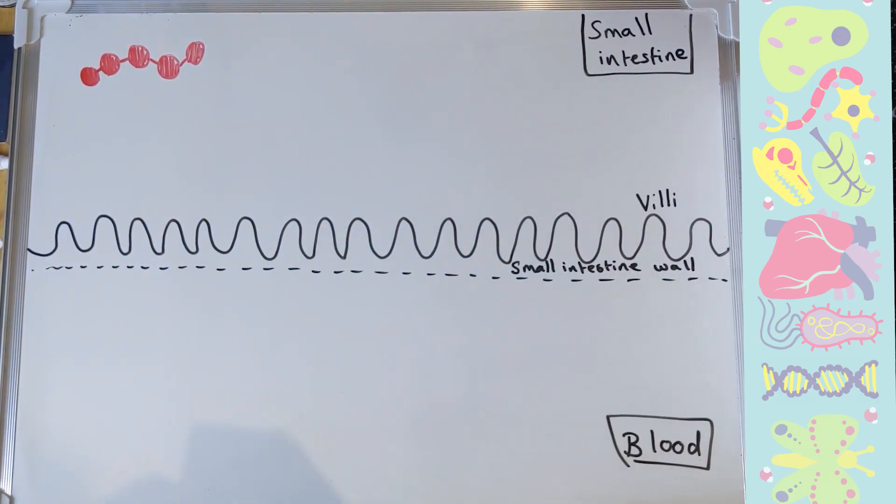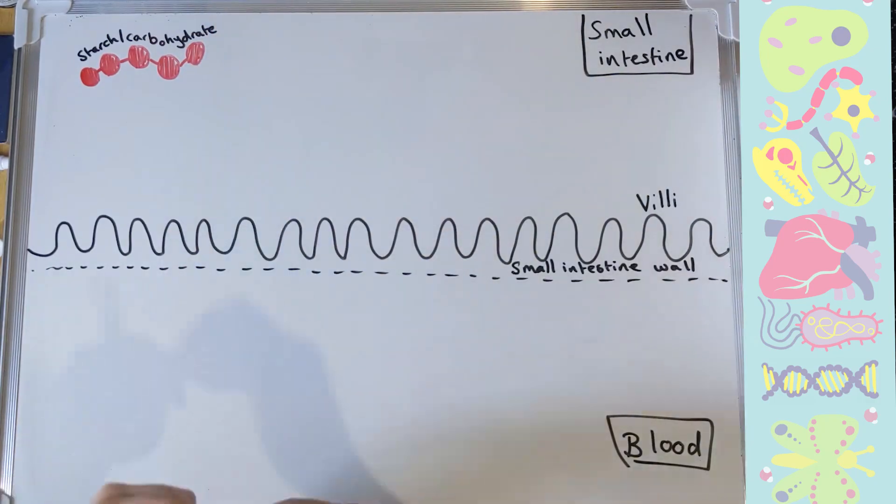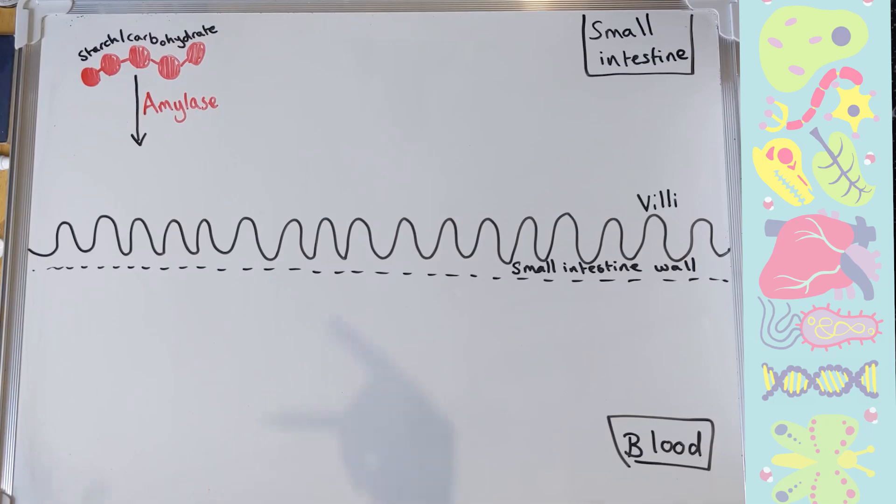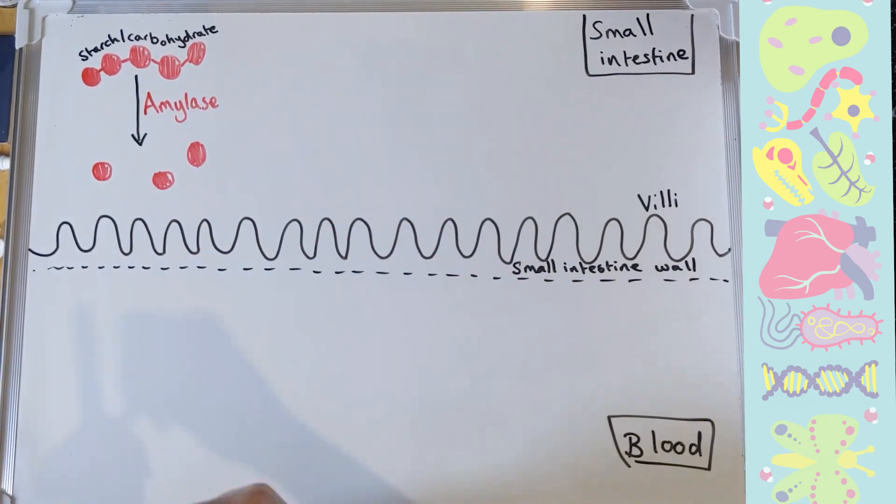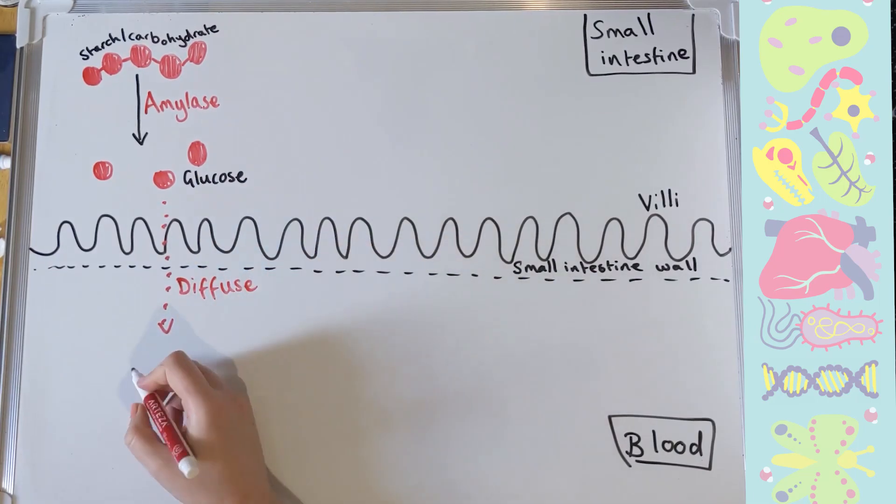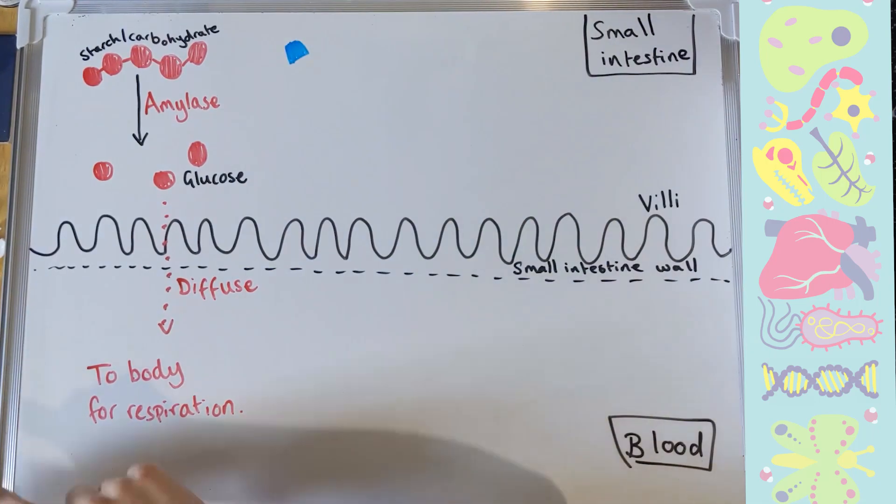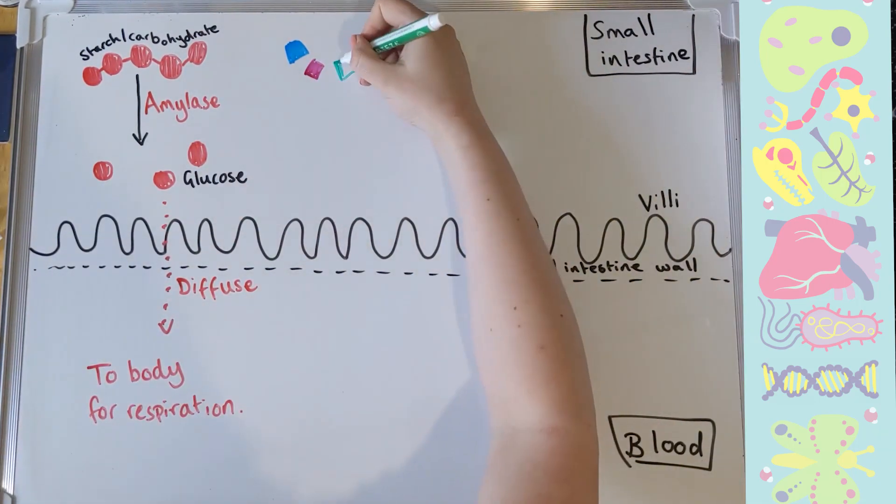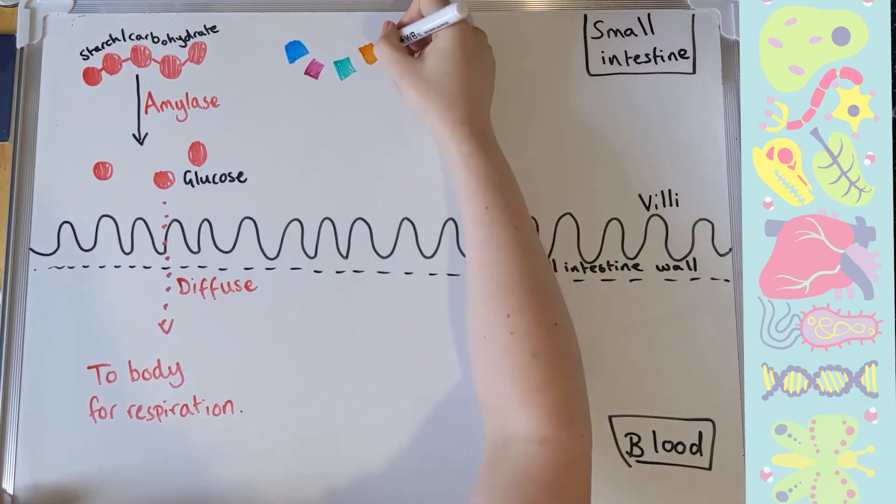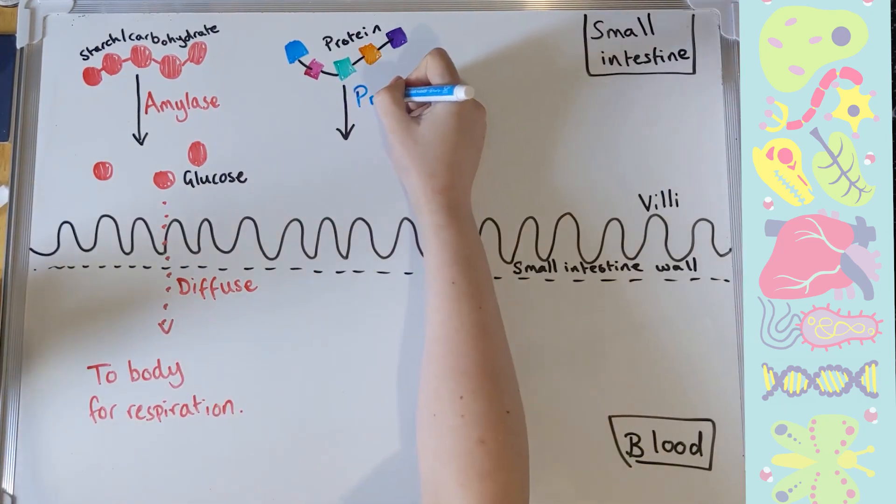Our first substance is starch, long chains of sugar, carbohydrates. That gets broken down by the enzyme amylase. That breaks the bonds and turns that long starch into lots of little glucose molecules, which are then small enough to diffuse across that villi in the small intestine. Remember those villi are there to make the surface area nice and big for maximizing or absorbing all those beautiful nutrients into your body. Glucose is then going to diffuse, and then that's going to get used in your body for things like respiration.